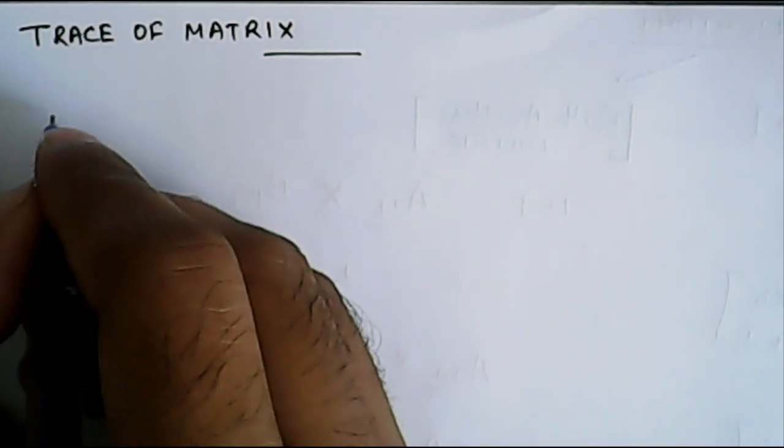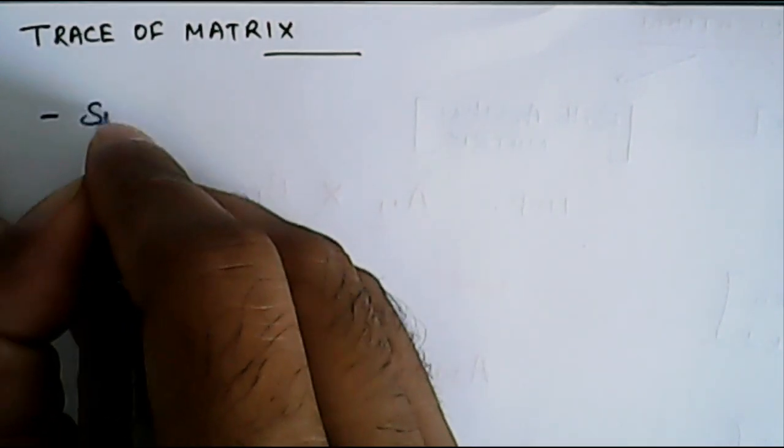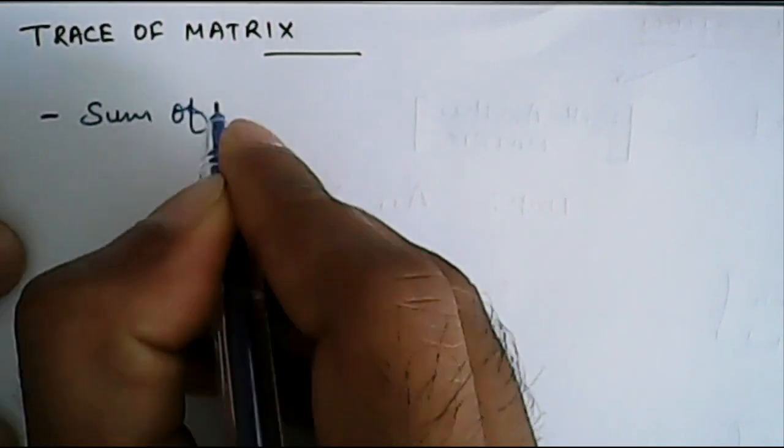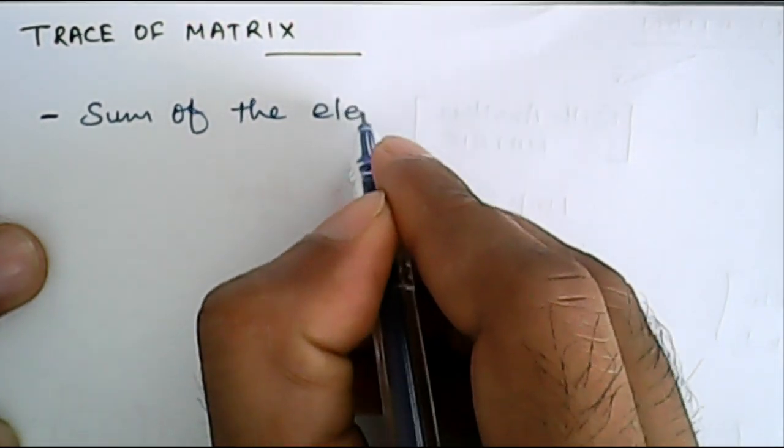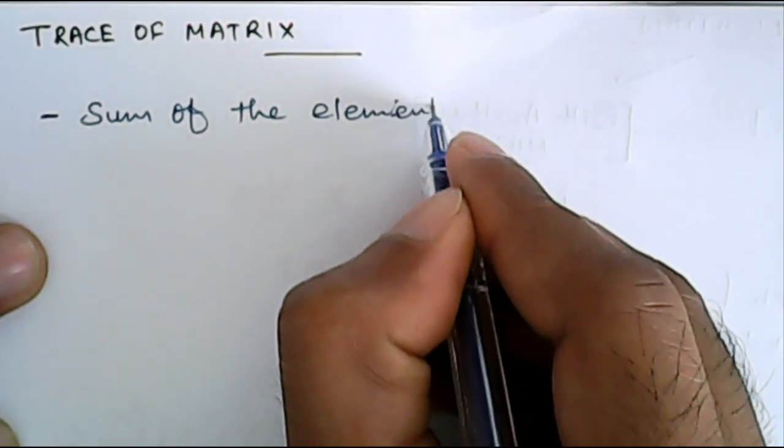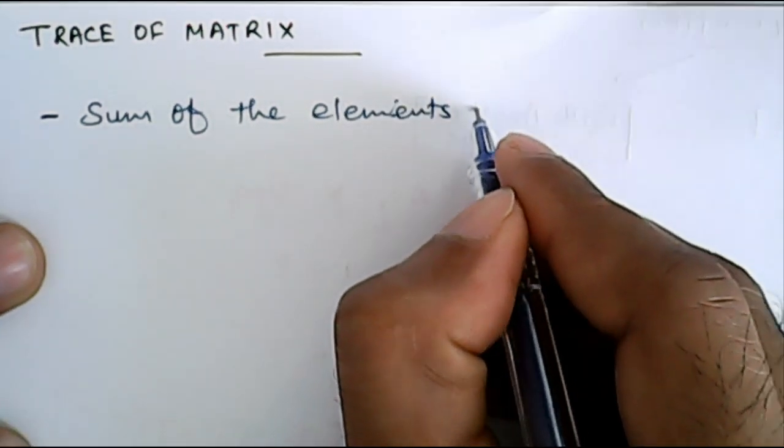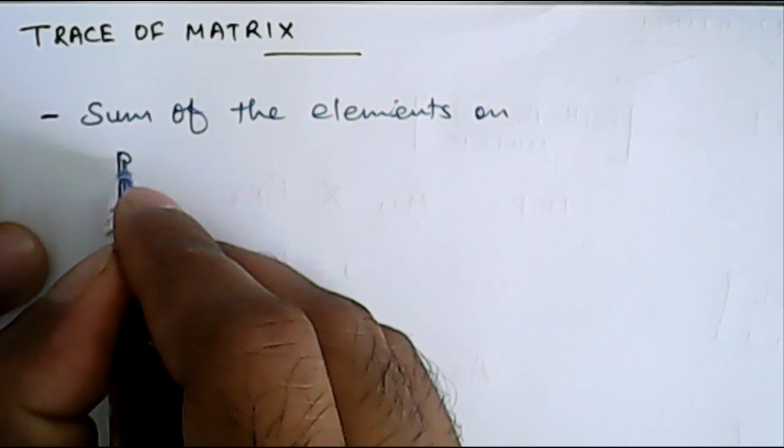Trace of a matrix is the sum of the elements on principal diagonal.